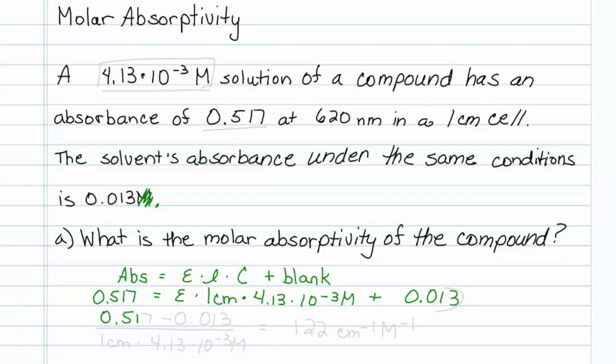0.517 minus 0.013, divided by 1 centimeter and also by 4.13 times 10 to the minus 3 molar. Punch that into our calculator, and the value that comes out is 122.0. Three sig figs is good here: 122, and the units of molar absorptivity are centimeters to the minus 1 molar to the minus 1.